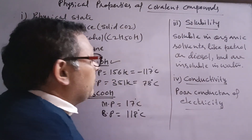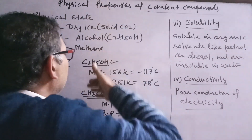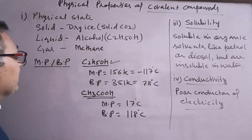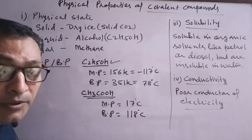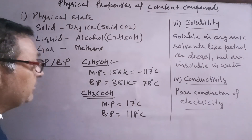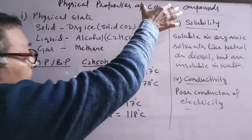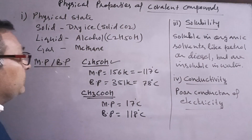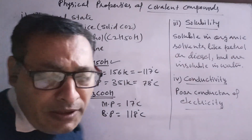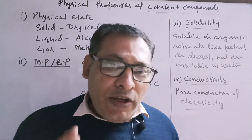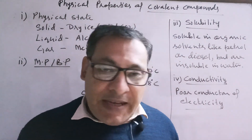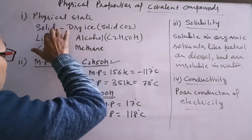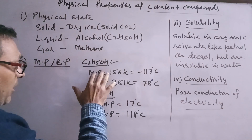Now let's compare covalent compounds with ionic compounds on the basis of these physical properties. Ionic compounds like sodium chloride are found only in solid state, whereas covalent compounds are found in all three states: solid, liquid, and gas. Ionic bonds are actually a strong bond as compared to covalent bonds.